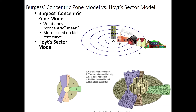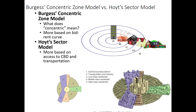Hoyt's sector model just takes the idea of the concentric zone model and instead portrays it as pizza slices. It's not that one's right and one's wrong — both tend to exist in a lot of cities. In fact, both of these models were based on Chicago. Hoyt's sector model is more based on getting access to the central business district. It shows that in number two we've got a highway area, so industries also include highways — this makes it easier to get to and from downtown. Every part of the model has access to downtown, and every one of these zones can get downtown fairly easily.